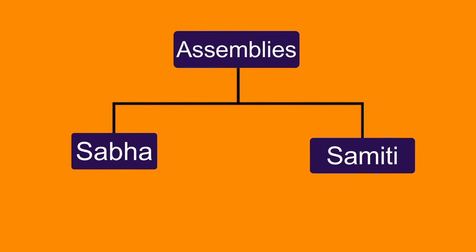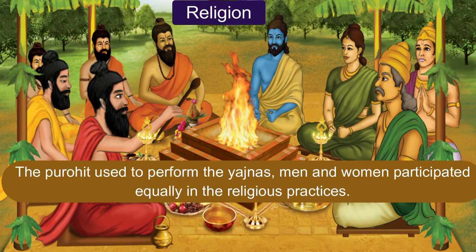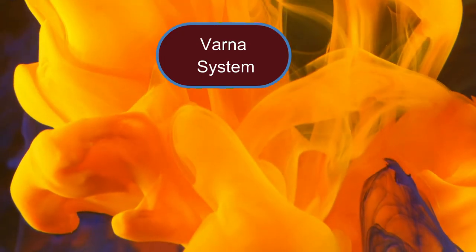There were assemblies which used to control the king; they were the Sabha and the Samiti. Regarding religion, the Purohit used to perform the Yajnas, and men and women participated equally in religious practice.